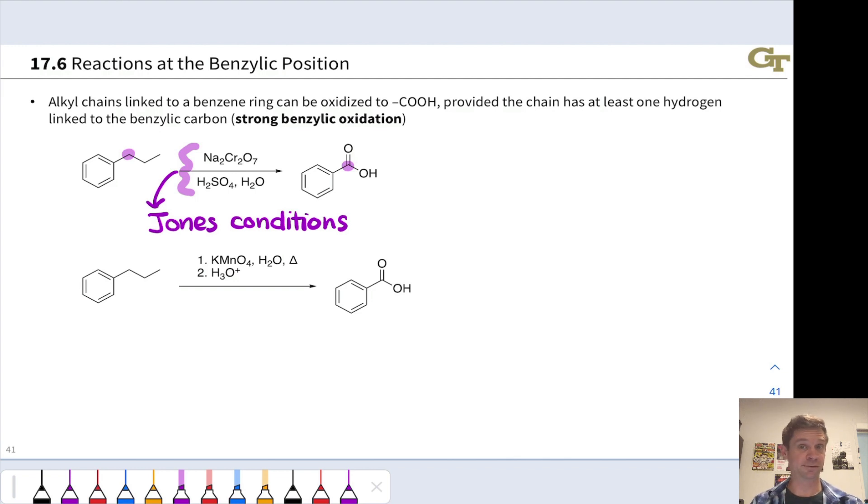We'll see these conditions again in the course in a different context, not involving aromatic rings as well. So this is an oxidation process. We know that because C-H bonds in the starting material are replaced with C-O bonds in the product, and we'll have a lot more to say about why this constitutes oxidation later in the course.